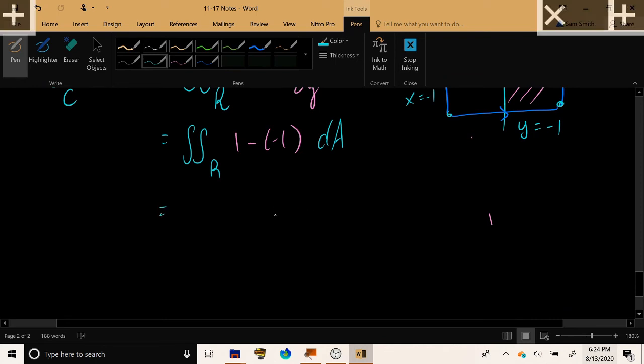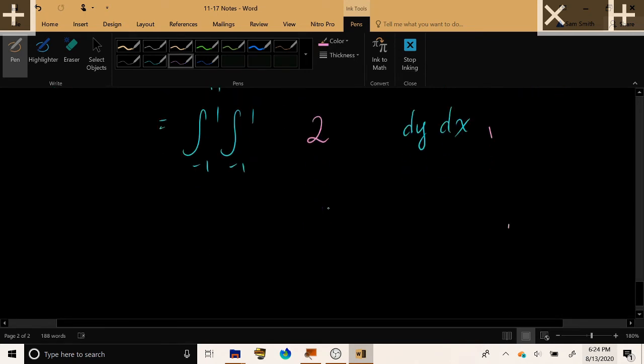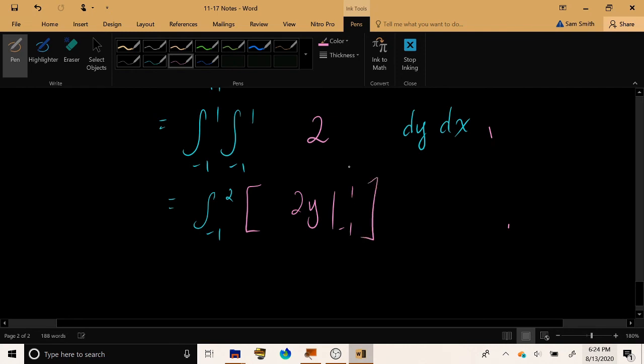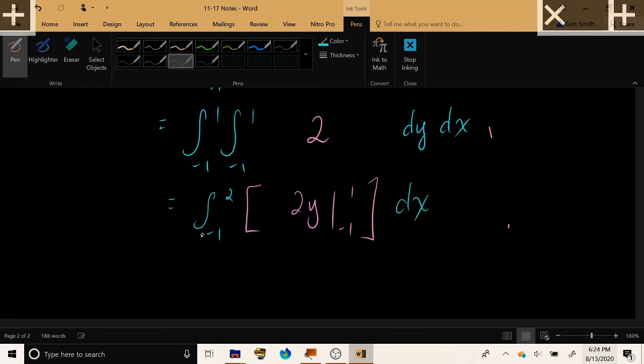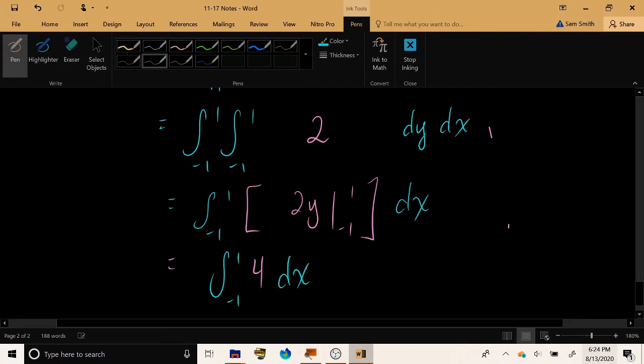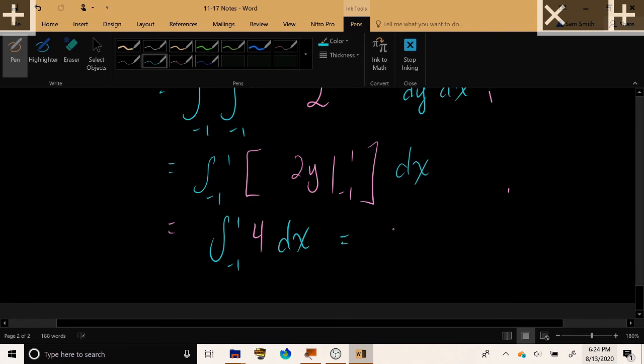So we can integrate as x goes from negative 1 to 1 as y goes from negative 1 to 1 the constant function 2. And since it is a constant function, it's extremely easy to integrate. Working on the inner layer, we get 2y evaluated from negative 1 to 1 which works out to be 4. Whoopsie, this is a 1. And then we have the integral of 4 with respect to x, 4x evaluated from negative 1 to 1, which is the value 8 that we found yesterday.